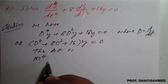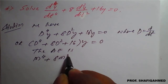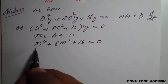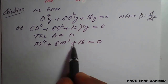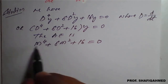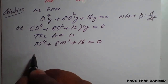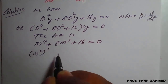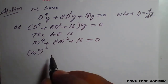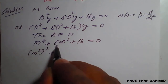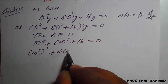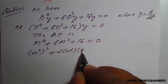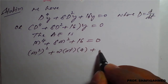The auxiliary equation is m⁴ plus 8m² plus 16 equal to 0. I will rearrange this in a simpler form: m⁴ I write as (m²)², and 8m² I write as 2 times m² times 4.